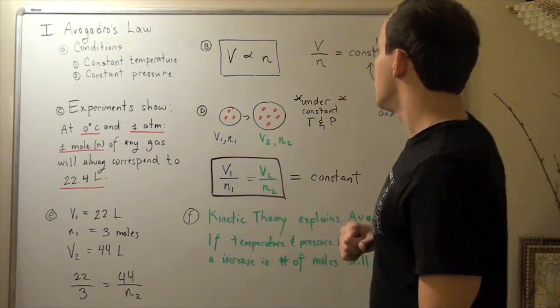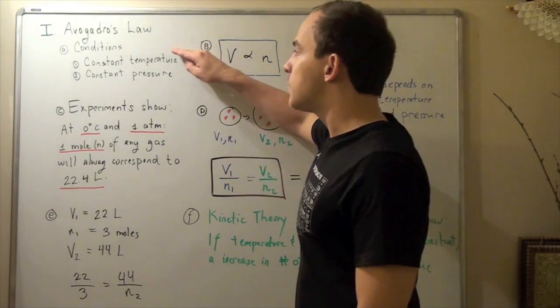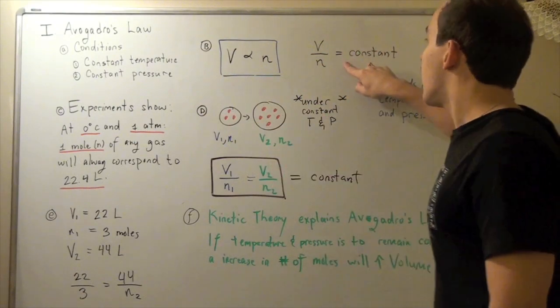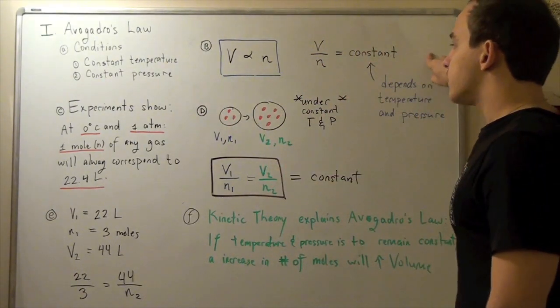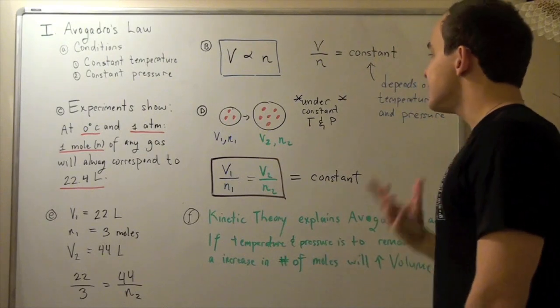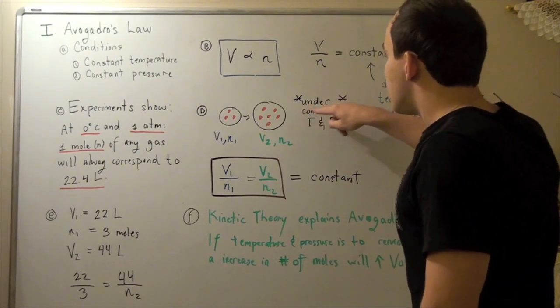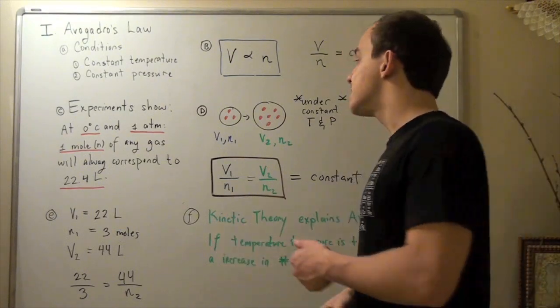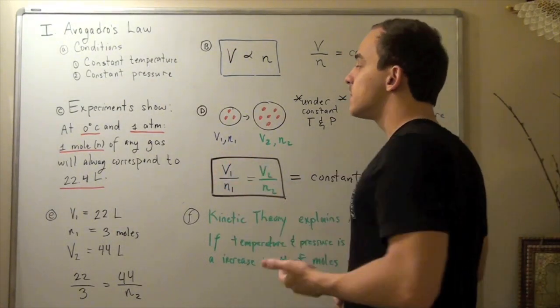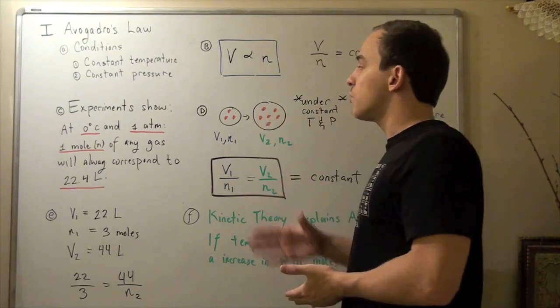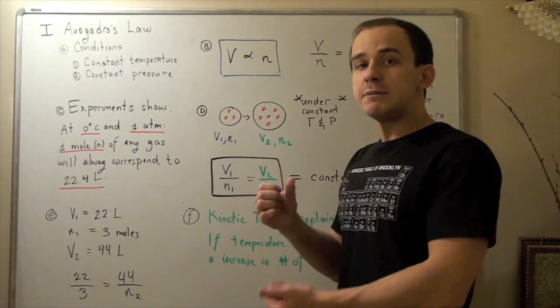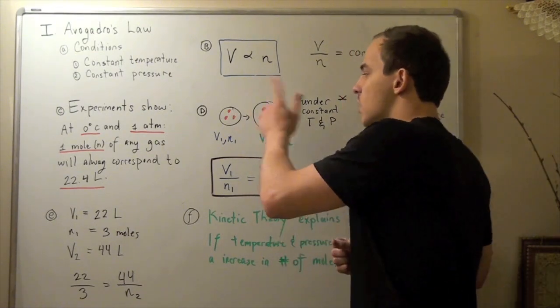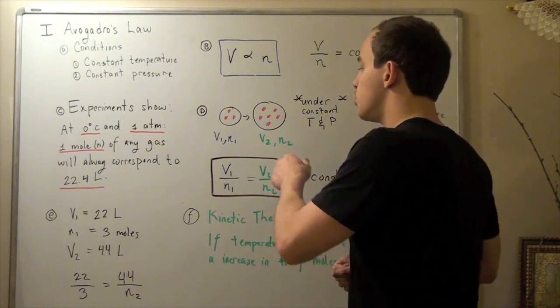Let's look at Part D. So earlier I said that for any given temperature and pressure, as long as they are held constant at that same temperature and pressure, our constant will always be the same. So suppose that's our case. Suppose I have a system under which I have constant temperature and pressure. Now suppose I have a balloon at some volume one and some volume two. And suppose I have three molecules or three moles of my gas inside my balloon. What if I increase the number of moles to six moles? What will happen to my volume?